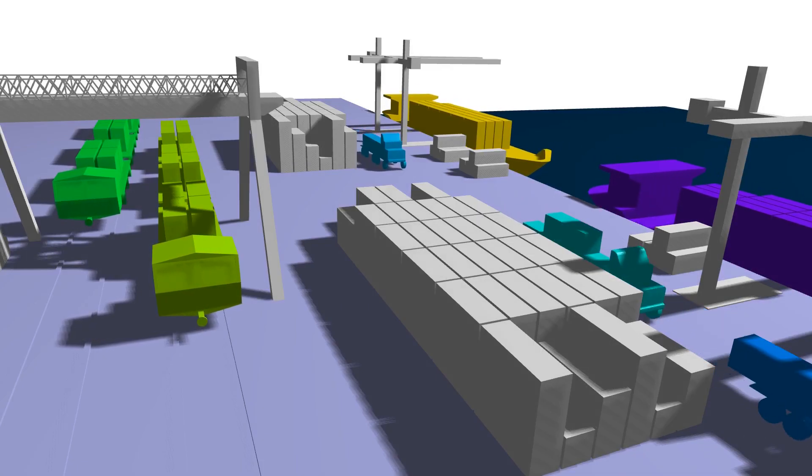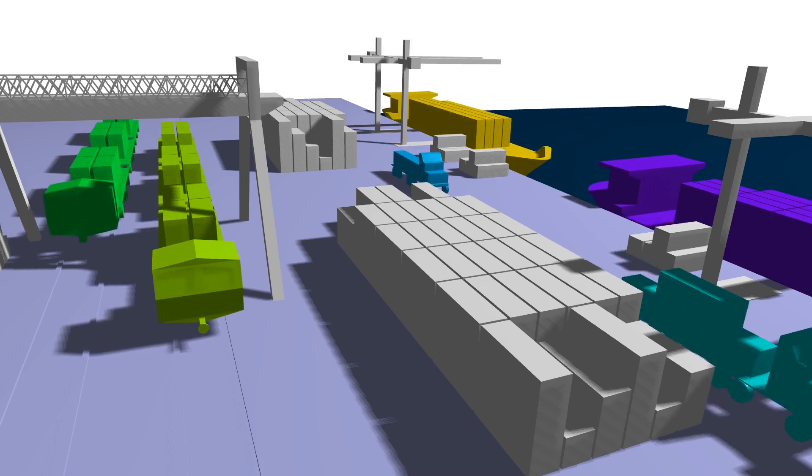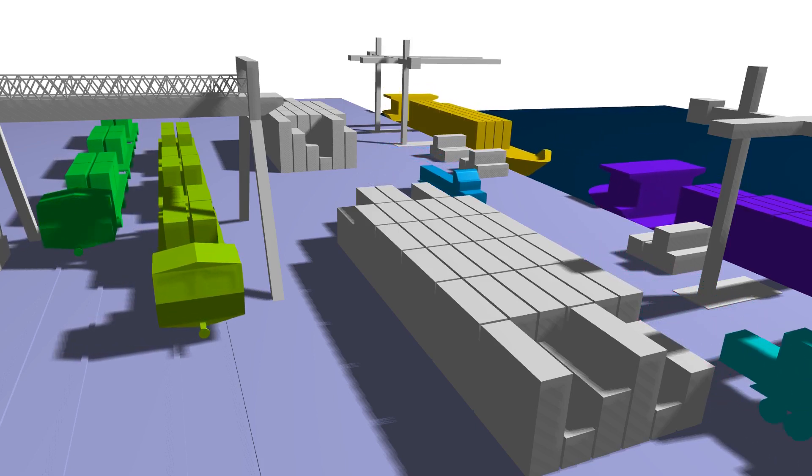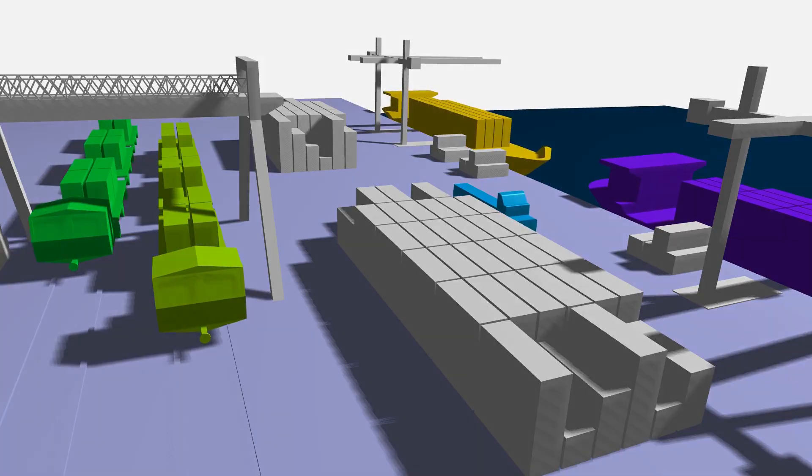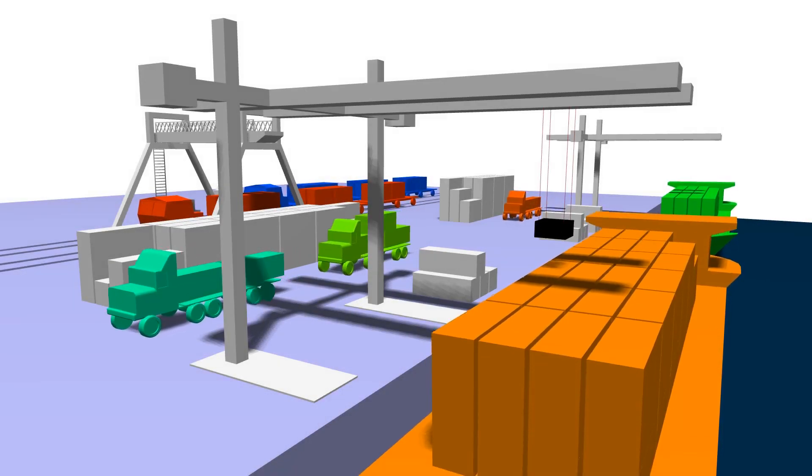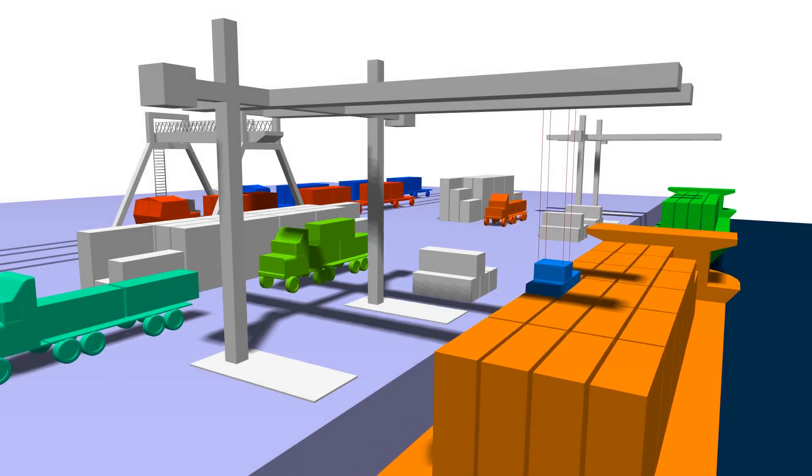This last example shows a training scenario for a port crane operator. In the simulation, trains, trucks, and ships are merged with their cargo. Adaptive merging keeps the scene complexity low as the operator sorts containers.